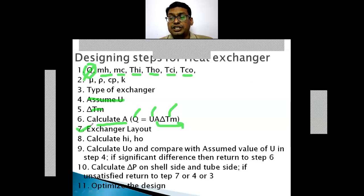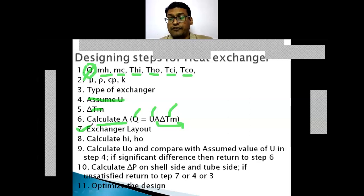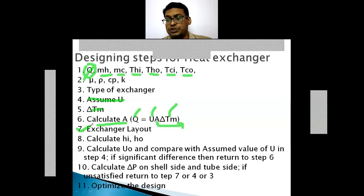The next step is to calculate the shell-side heat transfer coefficient h_o. For this, one must calculate the flow area for the shell side — that is, the heat transfer area on the outside of the tubes. Then calculate the velocity of the fluid passing through the shell side, the equivalent diameter for the shell side, the Reynolds number for the shell-side fluid, and the Prandtl number. Finally, the shell-side heat transfer coefficient h_o is calculated using defined correlations in terms of Reynolds number and Prandtl number.